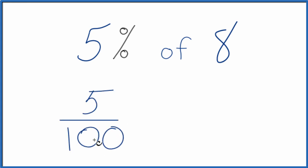That's the same as 5%. Now the word 'of,' think of that as multiplication. We're going to multiply this by 8. Let's call it 8 over 1 though. Still 8, we're just dividing by 1. But now the numerators and denominators are lined up.